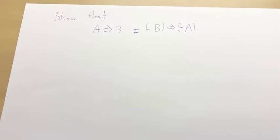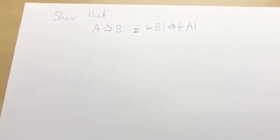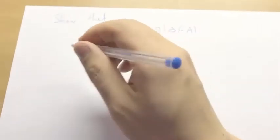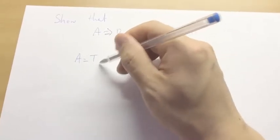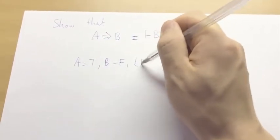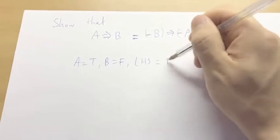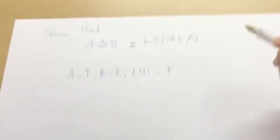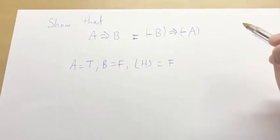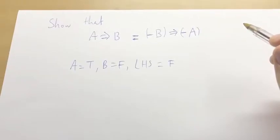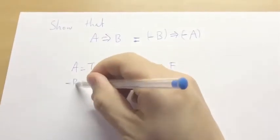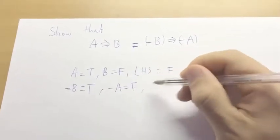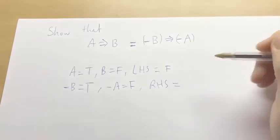So let's think about it. The left-hand side, we know that the left-hand side is basically true in all cases, except for when A is true and B is false. Okay, so when A is true, B is false, then left-hand side is false. But in this case, not B is equal to true, and not A is equal to false. So the right-hand side is actually false for the same, it's exactly the same statement.